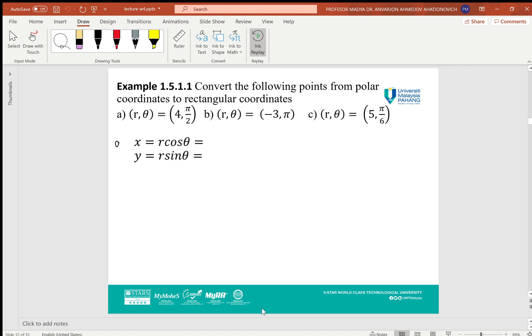Example 1.5.1.1: Convert the following points from polar coordinates to rectangular coordinates. First, the point (4, π/2). Here r is 4 and θ is π/2, so we use the formulas x = r cosθ and y = r sinθ. Since cos(π/2) = 0, we get x = 0. Since sin(π/2) = 1, we get y = 4. So the rectangular coordinates are (0, 4).